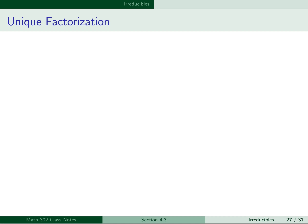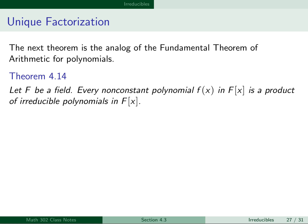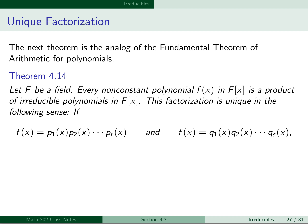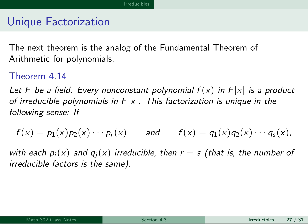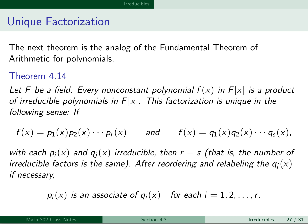Now we want to talk about unique factorization. The next theorem is the analog of the fundamental theorem of arithmetic for polynomials. Let F be a field. Every non-constant polynomial f(x) in F[x] is a product of irreducible polynomials in F[x], and this factorization is unique: if f(x) factors as p₁·p₂·...·pᵣ and also as q₁·q₂·...·qₛ with each pᵢ(x) and qⱼ(x) irreducible, then r equals s, and after reordering the qⱼ(x) if necessary, each pᵢ(x) is an associate of qᵢ(x) for each i from 1 through r.